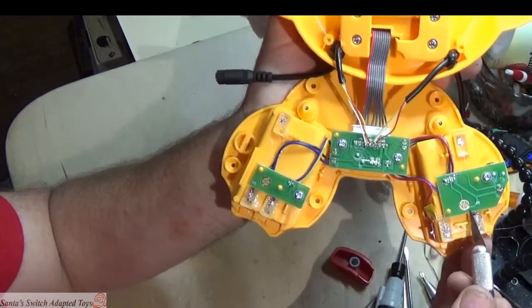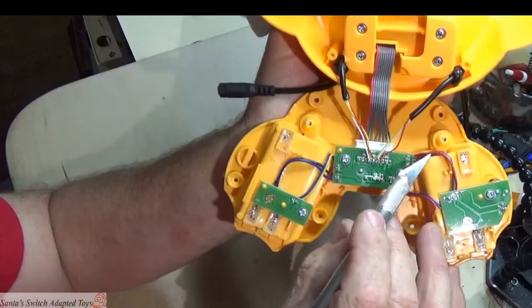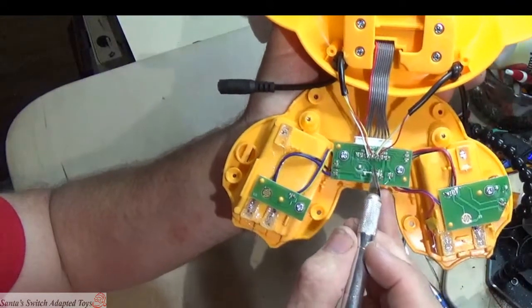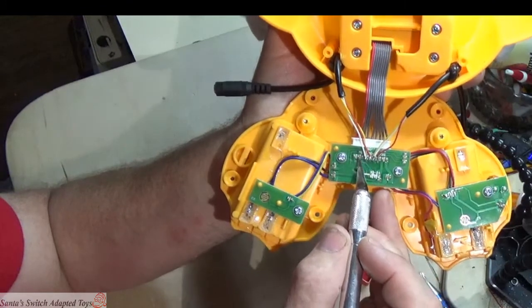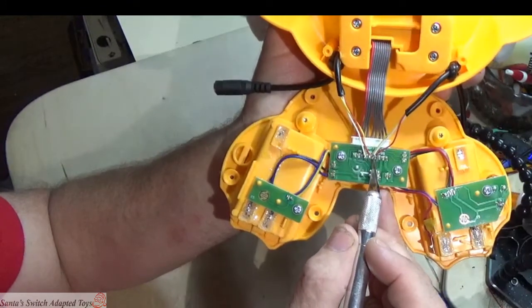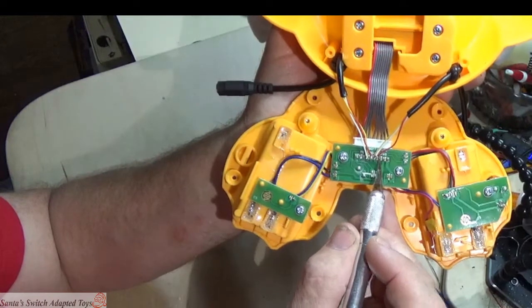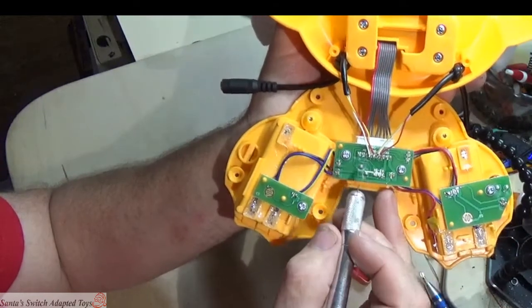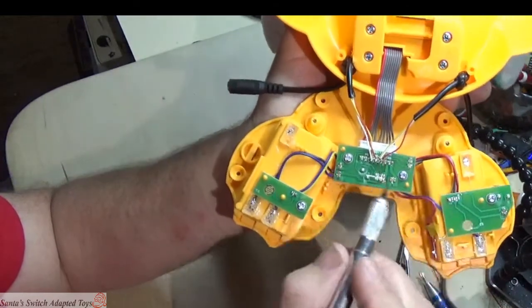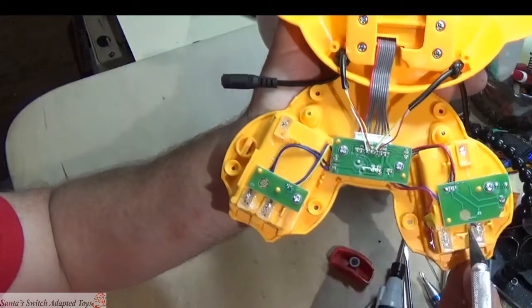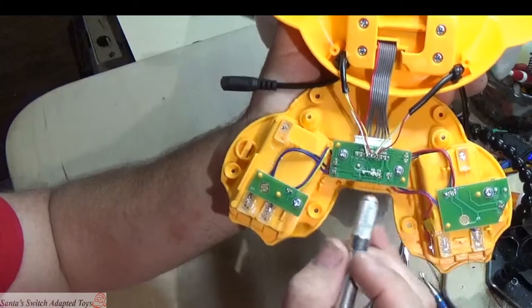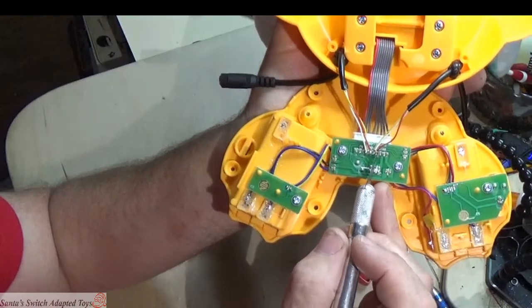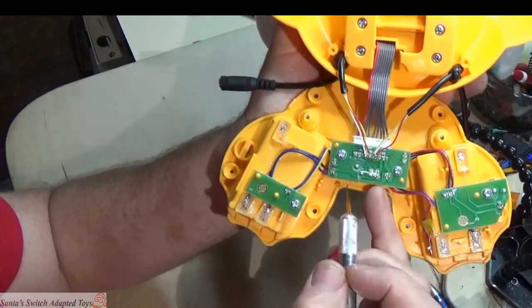On the right button, when you track these out to see where they went, they go to number six and number seven on this line of posts. So the same thing applies. Why solder to here and defeat the factory switch when we can solder to something that is very easy to do? And that's those points there.